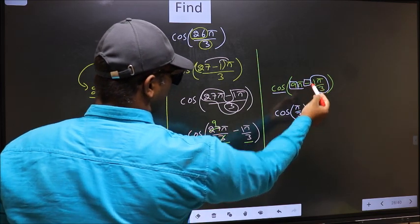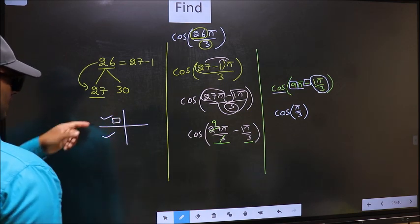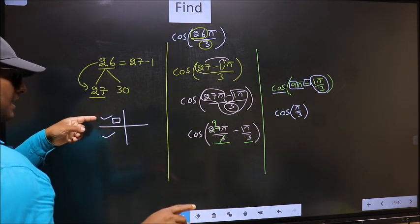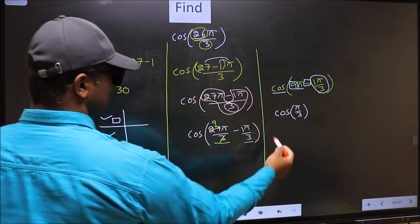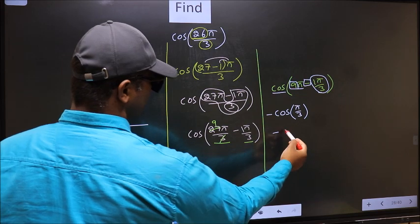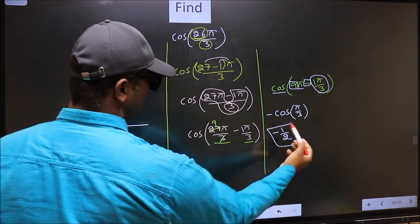Here we have negative. That means the angle lies in the second quadrant. And in the second quadrant, cos is negative. So we should put negative. So negative cos π by 3 is 1 by 2. This is our answer.